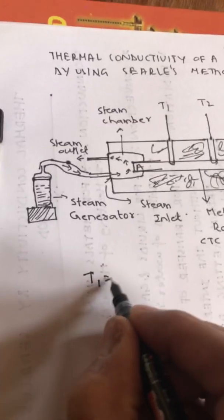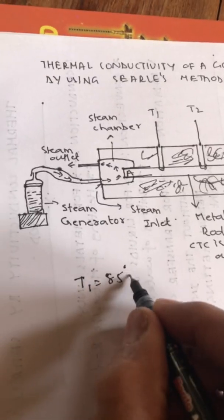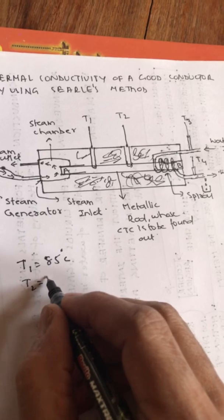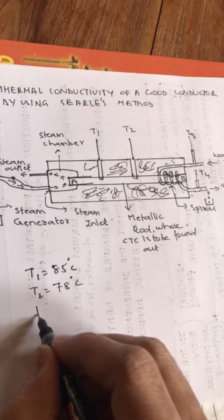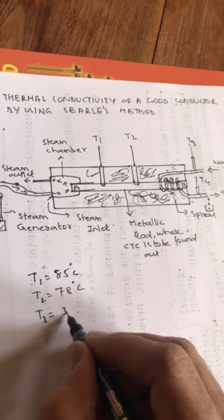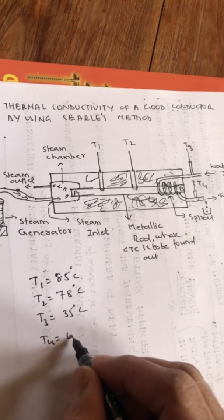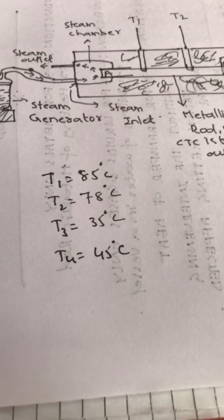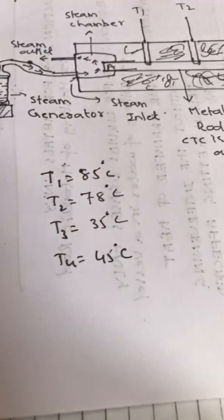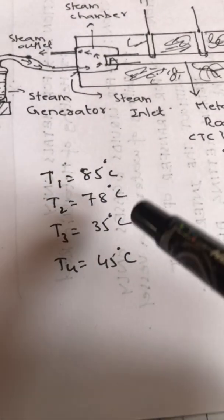You only have to continue for that period of time when all four thermometers show a steady temperature. Steady means, for example: T1 is at 85°C, T2 is at 78°C, T3 is at 35°C, and T4 is at 45°C. At this steady state, the temperatures will not go up beyond these values, even if you run the experiment for another 20 minutes.